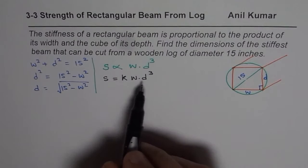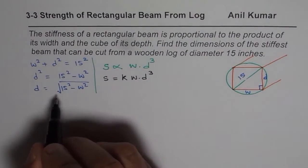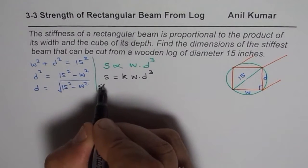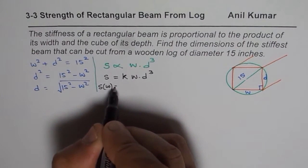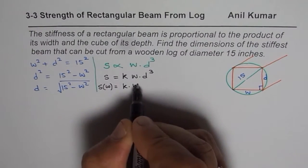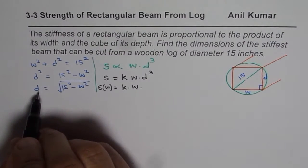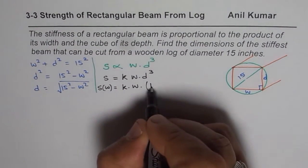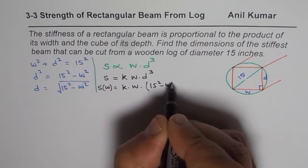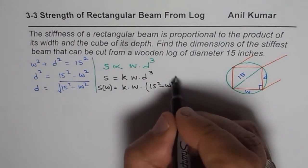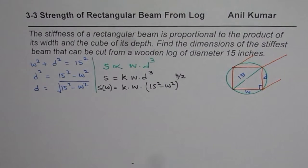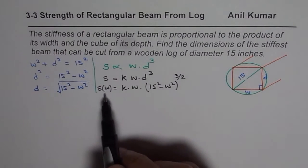To express stiffness in one variable, we substitute D in terms of W. So stiffness as a function of width is S(W) = K · W · (15² − W²)^(3/2). That gives us a relation linking width with stiffness.